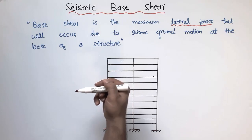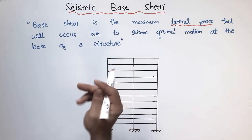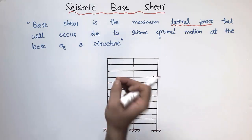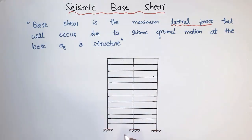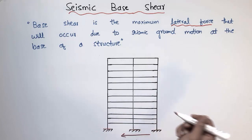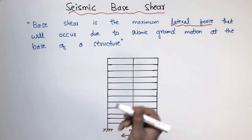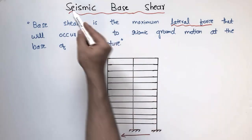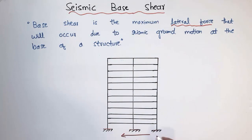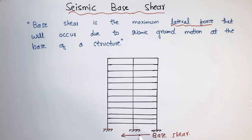The earthquake force is transferred from the soil to the base of the structure. There are forces acting at the base of the structure in the lateral direction and sideways direction on the building, and these forces are called the seismic base shear.